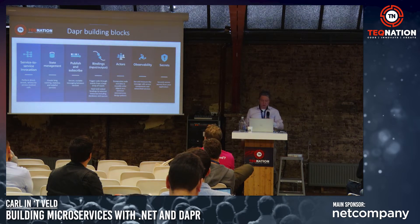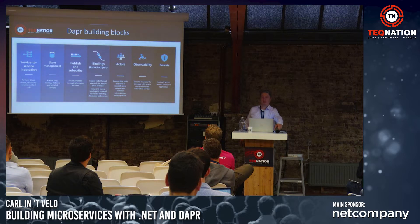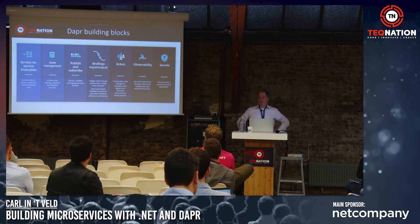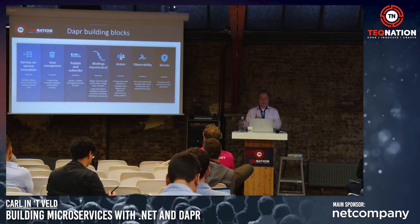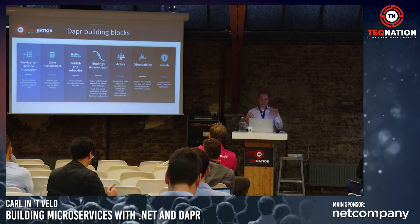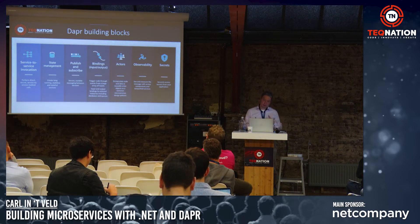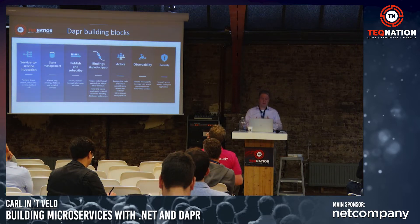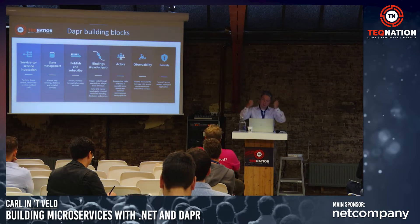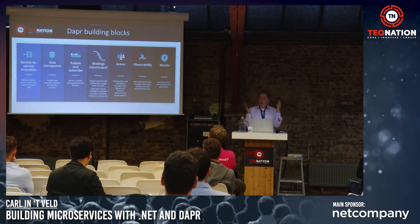It's all about these building blocks. Currently there are seven, with some in proposal stage to extend on this. Going left to right: Dapr provides easy means to invoke services in your landscape, a key-value store, state management, publish and subscribe for queuing and message exchange, and the bindings pattern. Maybe anyone has heard of working with the functions programming model? You have input bindings and output bindings — you select based on what trigger your function needs to run and scale up.